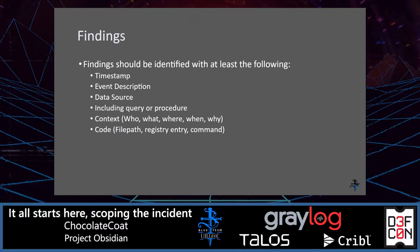Then the context: who, what, where, when, and why — and if you can't answer all of those, maybe you need to do a little bit of research to see if this is truly a finding. And finally, the code — whether it's the file path, registry, copy of the command, whatever it may be, I always recommend having that in your actual notes, which will be your report. You don't want to have to say 'if you query this in Splunk you can see it' — have a copy of it available so people can easily reference it.